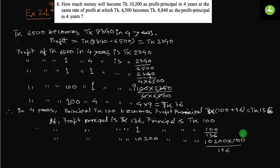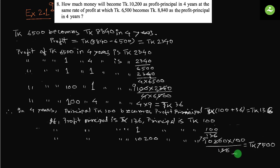If we simplify, we get 75 × 100 = 7500. So the principal is taka 7500. That is the answer — taka 7500. Thank you everyone.